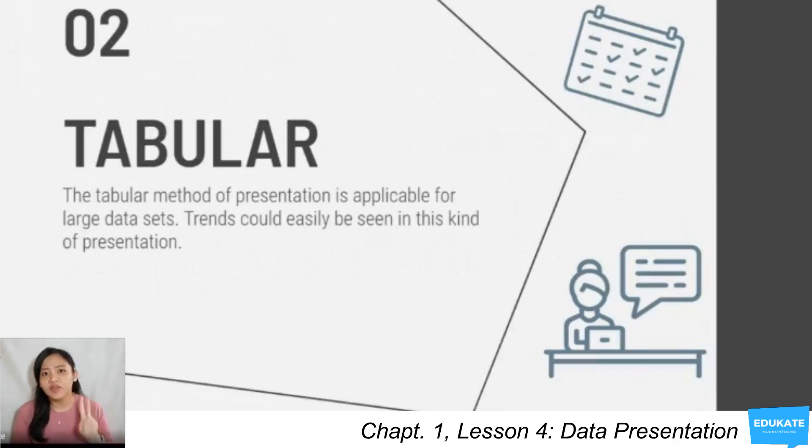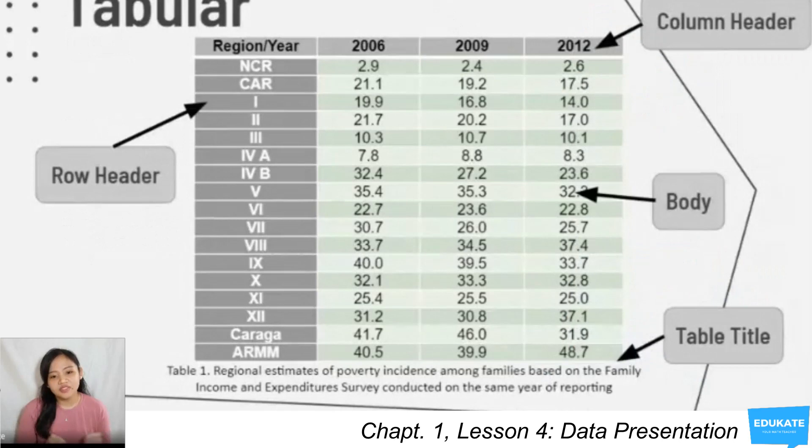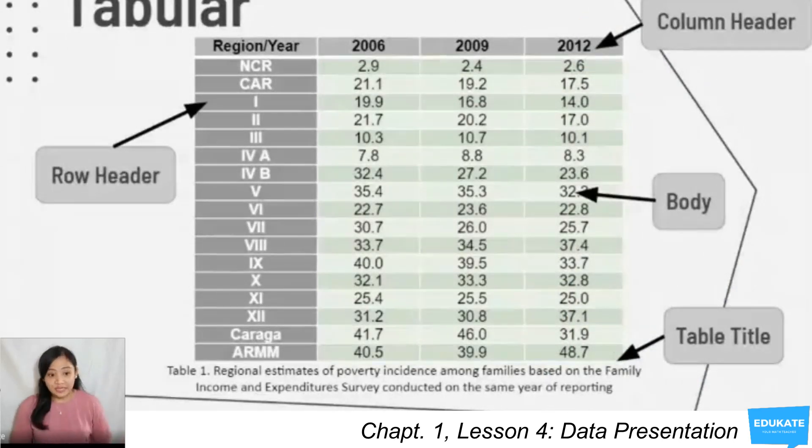The second method of data presentation is tabular method. The tabular method of presentation is applicable for large data sets, for example, more than 10 observations. Trends could be easily seen in this kind of presentation. For example, we have this table showing the regional estimates of property increase. You can notice that we have four labeled parts: row header, column header, body, and table title. Be very careful in using tabular data because there can be a loss of information when handling such kind of presentation.